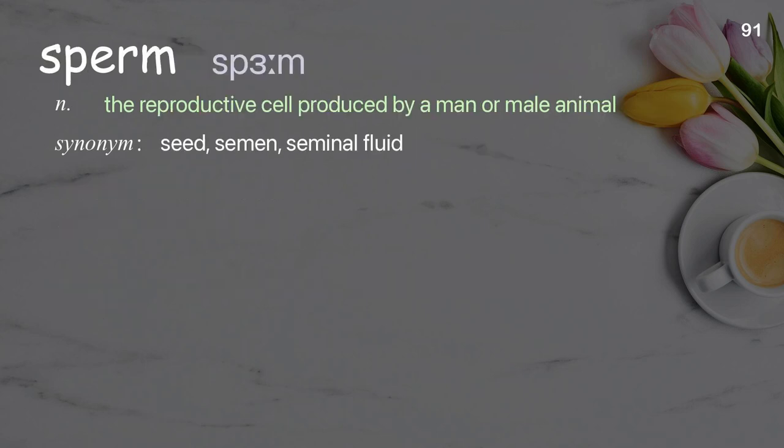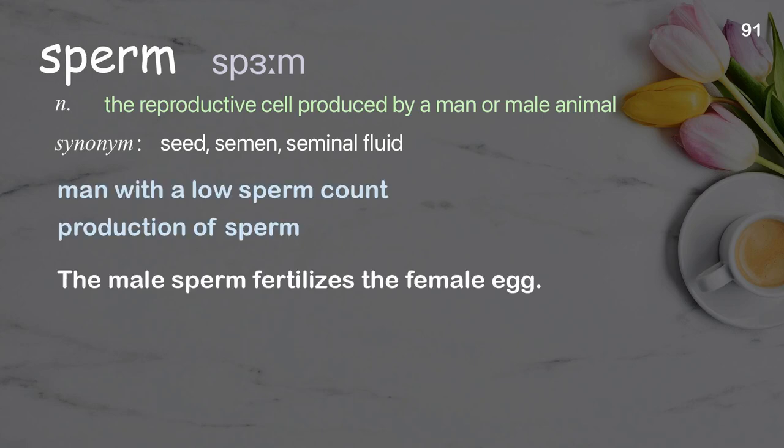Sperm: The reproductive cell produced by a man or male animal. Examples: Man with a low sperm count, production of sperm. The male sperm fertilizes the female egg.